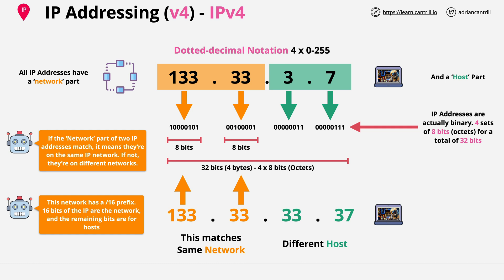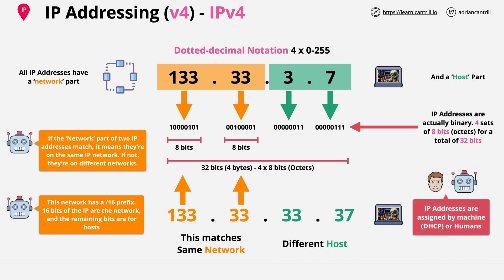IP addresses on networks are either statically assigned by humans — known as a static IP — or they're assigned automatically by machines, such as servers running DHCP server software. DHCP stands for dynamic host configuration protocol, which I'll cover in detail in a separate video. On a network, IP addresses need to be unique or bad things happen. Globally, in most cases, IP addresses also need to be unique — so generally when dealing with IP addresses, you want them to be unique, especially on your local network.